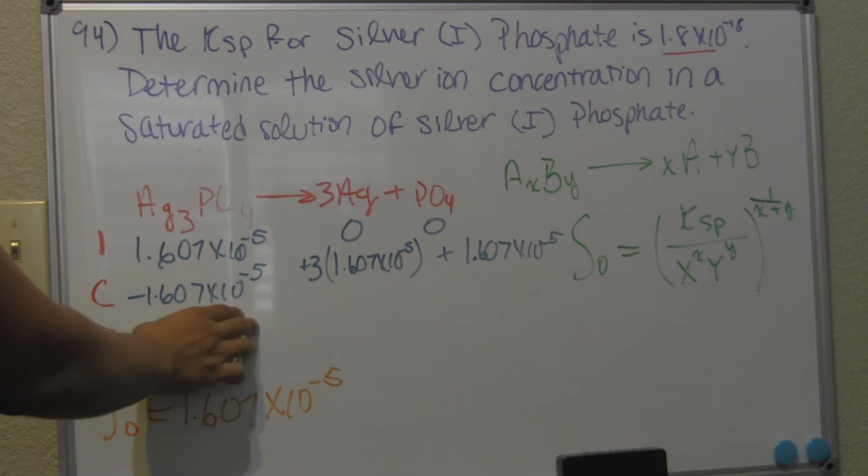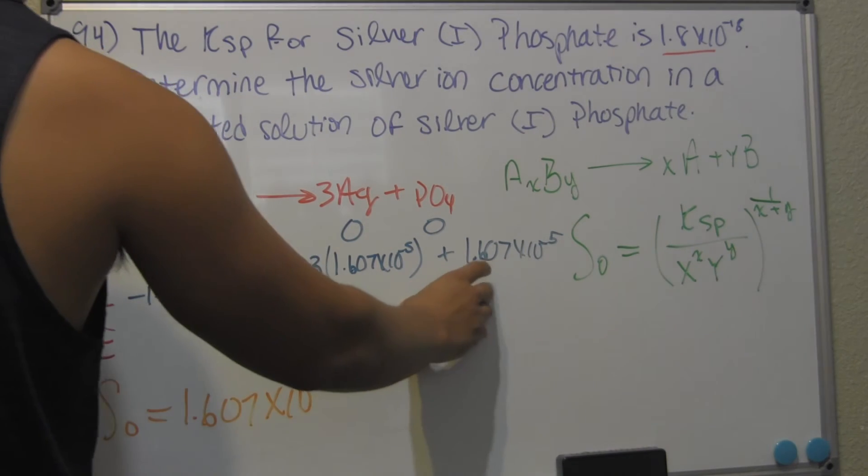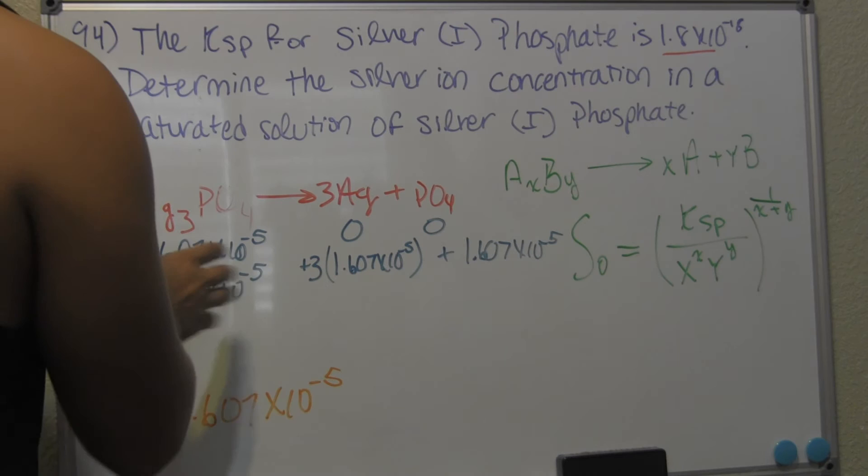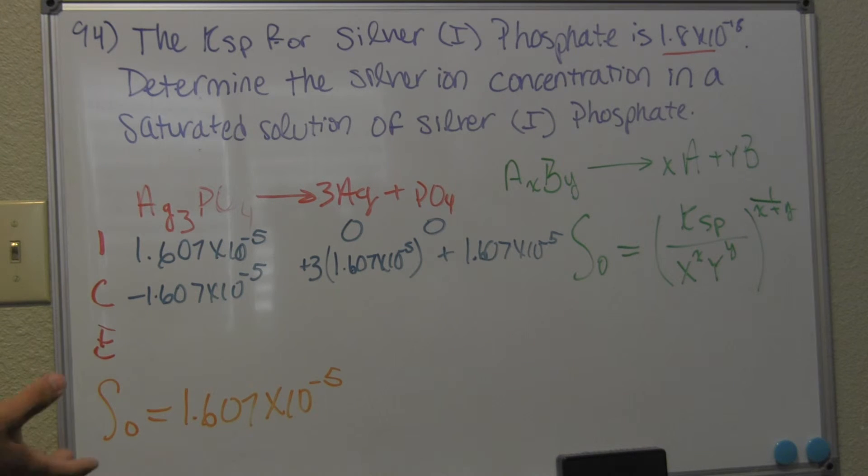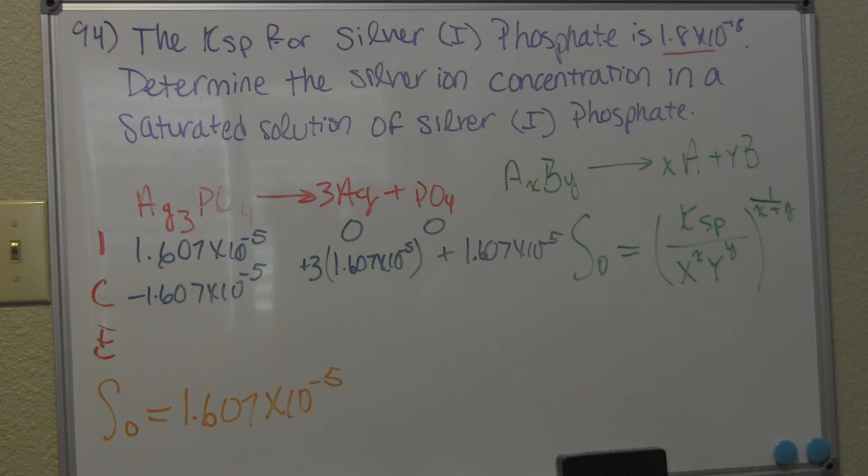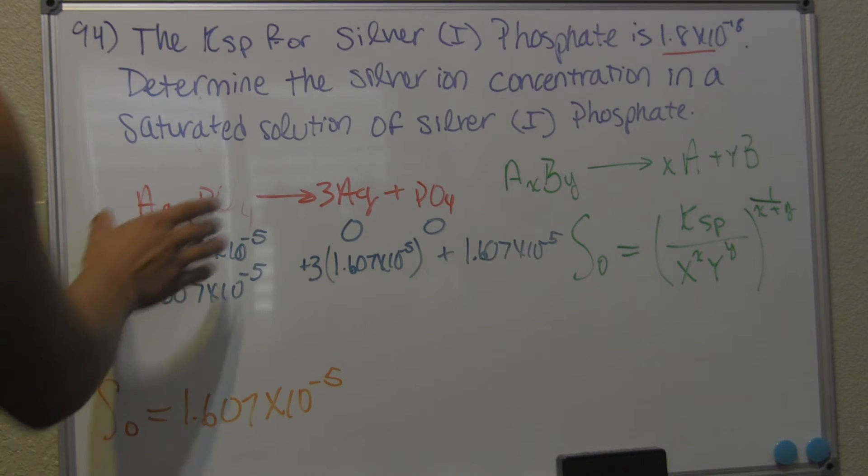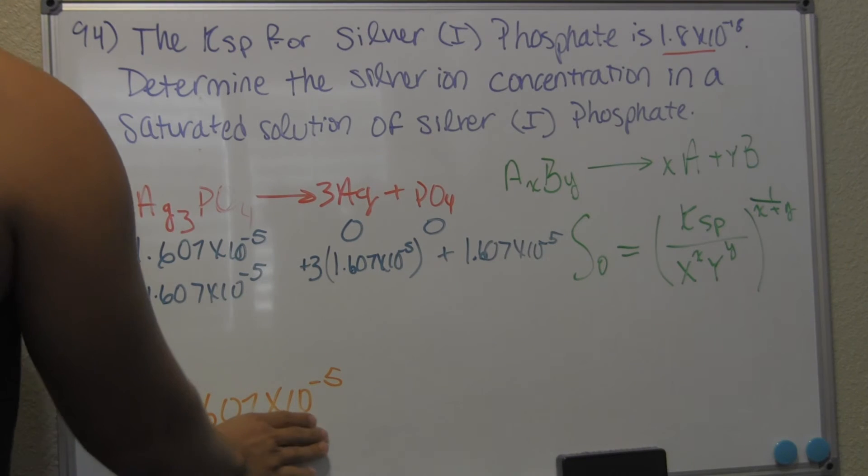So if you notice right here, don't get confused because it kind of seems that it completely dissociates. And this is only the case because we have molar solubility. But if it gave you, let's say one molar of silver and one of phosphate, calculate the silver ion concentration at equilibrium. Keep in mind that silver (I) phosphate is not a strong acid nor a strong base, so it's not going to completely dissociate.